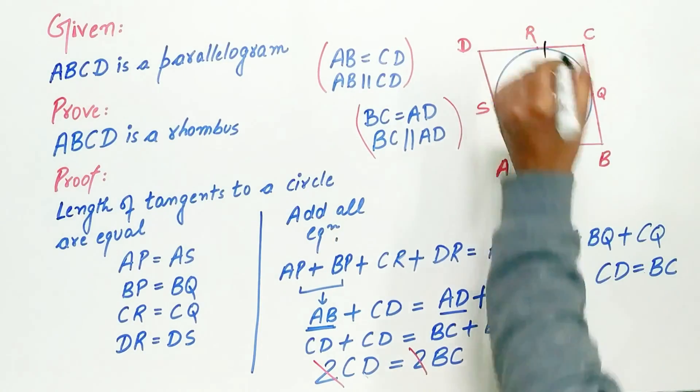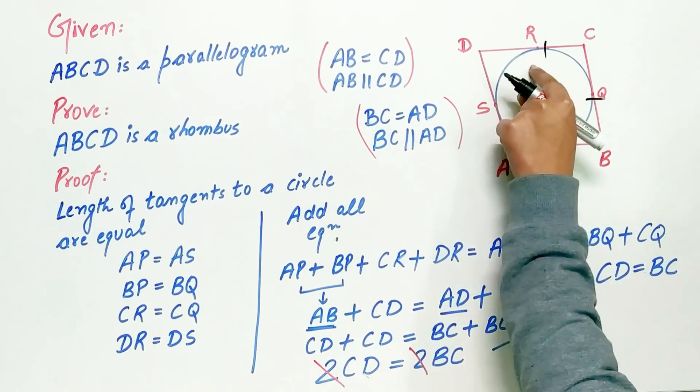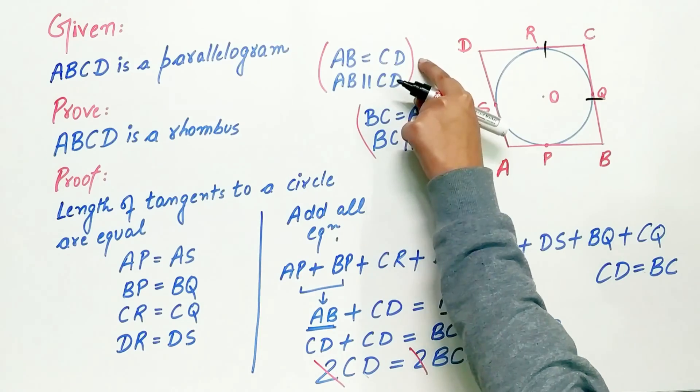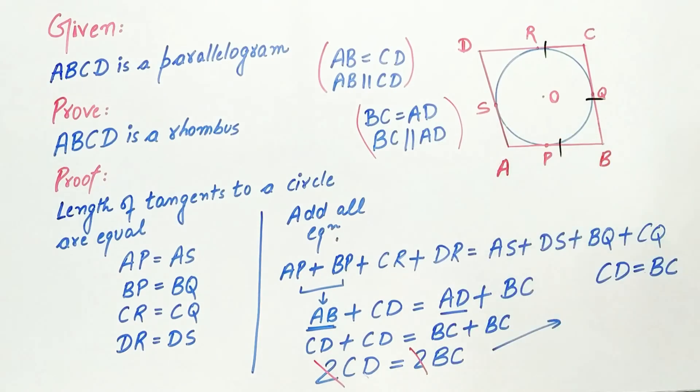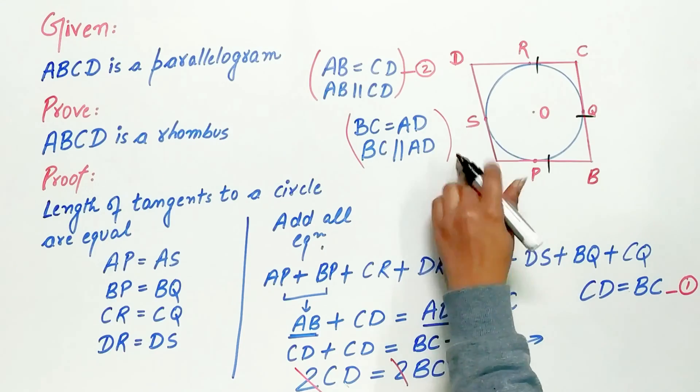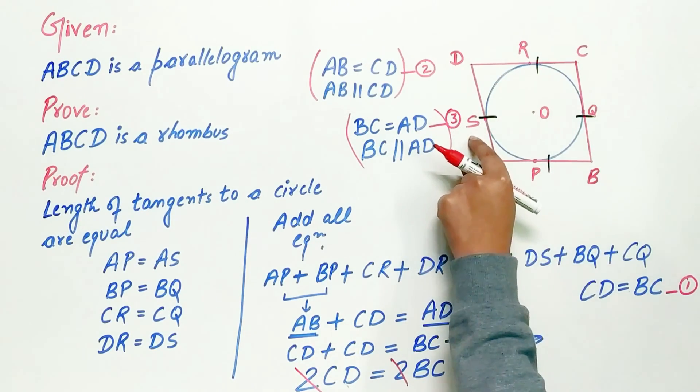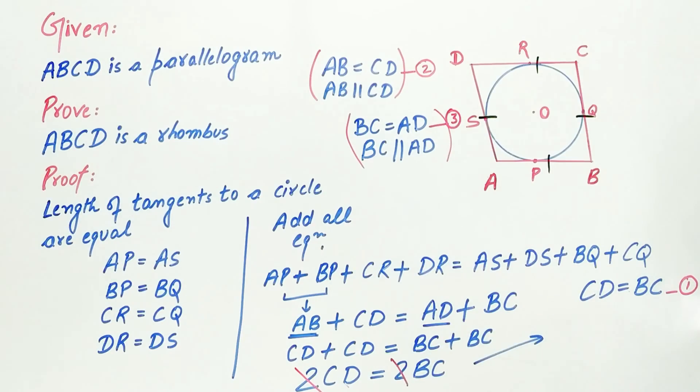CD is equal to BC. That means all the four sides of the parallelogram are equal. Hence, ABCD is a rhombus.